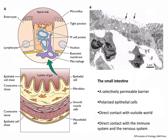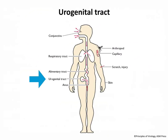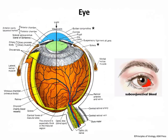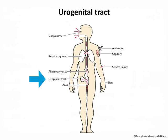The urogenital tract is also a good portal of entry, with its own protections including mucus and low pH. Papillomaviruses can enter the urogenital tract — these are sexually transmitted viruses, as is HIV. Quite often, sexual activity will predispose you to virus infection because it creates abrasions in the mucosa, which allow viruses to get in.